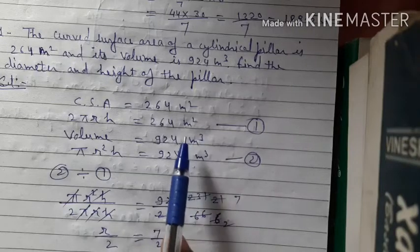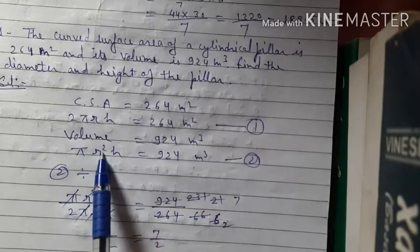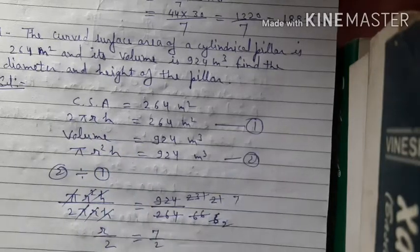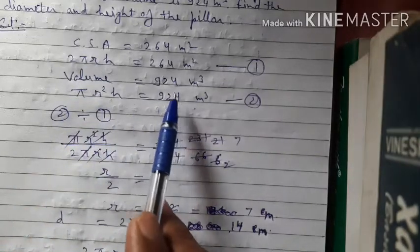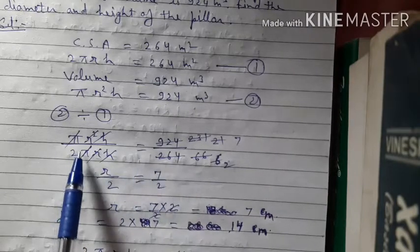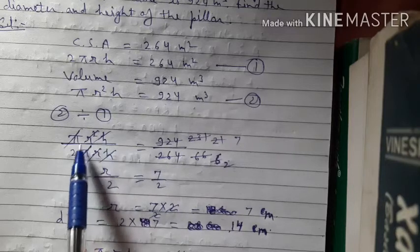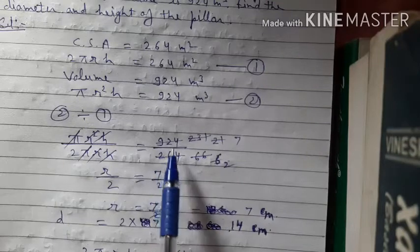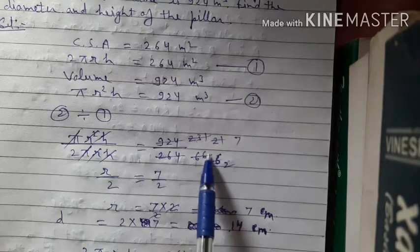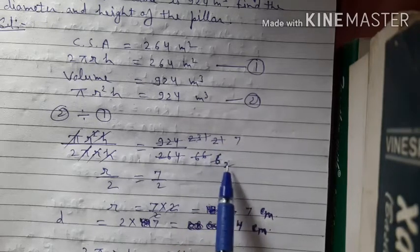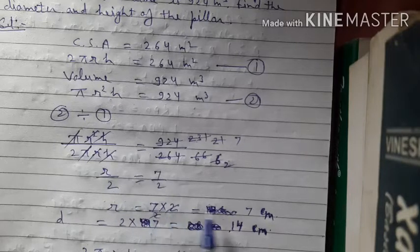To find r, divide Equation 2 by Equation 1: (πr²h) / (2πrh) = 924/264. π cancels, r cancels one r, h cancels, leaving r/2 = 924/264. Simplifying 924/264: dividing by 4 gives 231/66, then by 11 gives 21/6, then by 3 gives 7/2. So r/2 = 7/2, therefore r = 7 m.